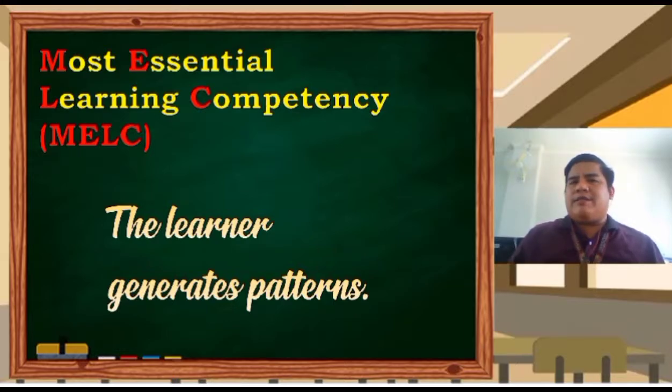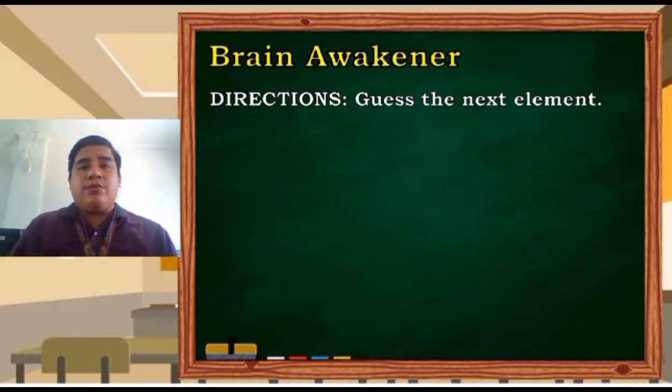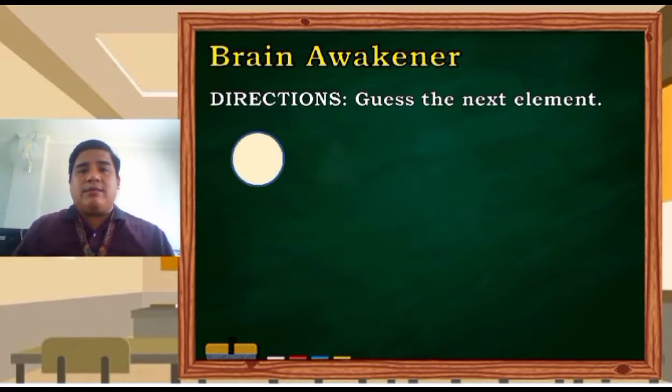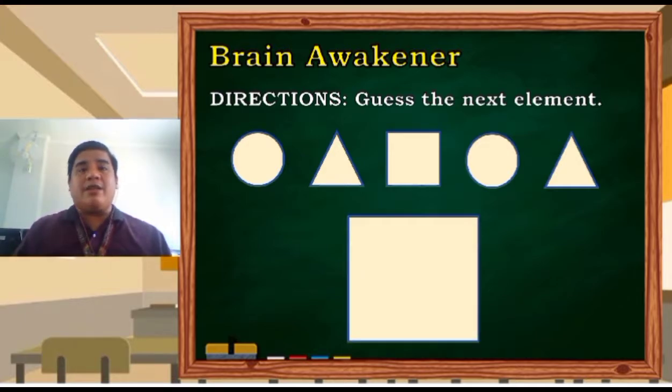Before we proceed to the main lesson, let's have some brain awakeners. Take a look at this. What you're gonna do is to guess the next element. We have a circle, a triangle, a square, another circle, another triangle. What do you think is the next shape? Oh yes, it is a square because the pattern goes like circle, triangle, square, circle, triangle, square. Very easy, isn't it?